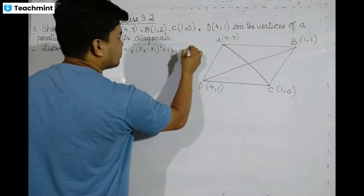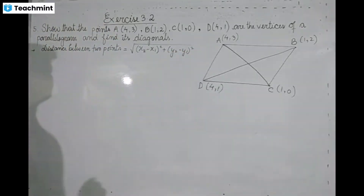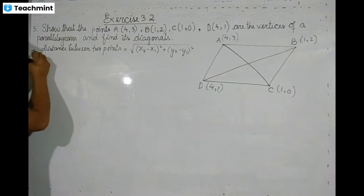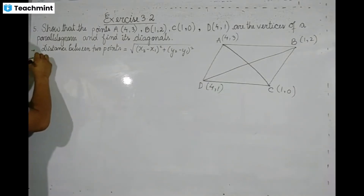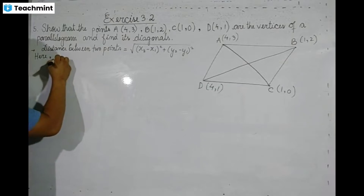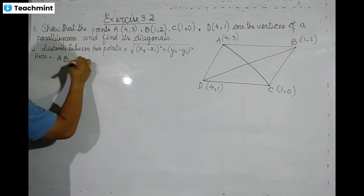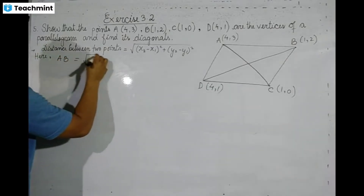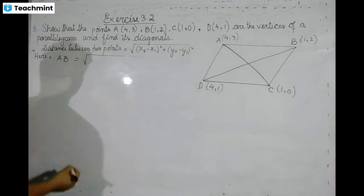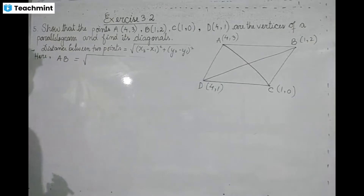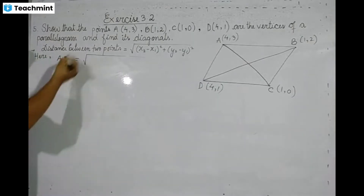From the formula, we can see what we are going to calculate. First, we calculate AB. AB uses the coordinates of A and B.